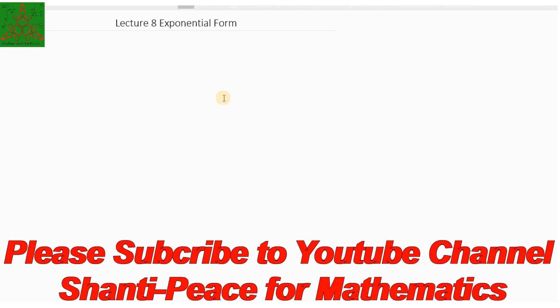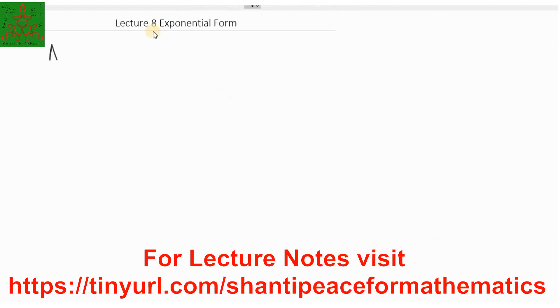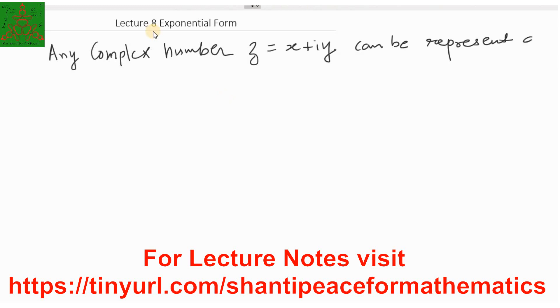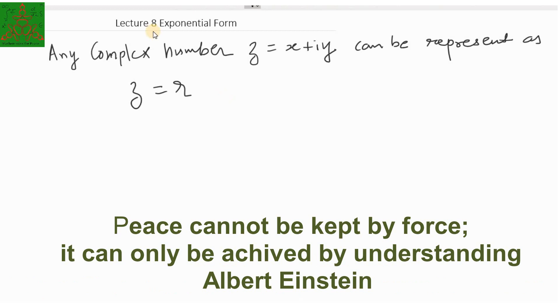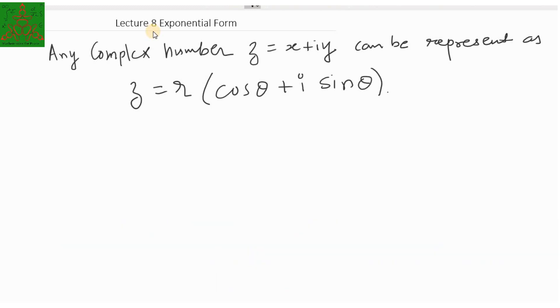Welcome to Santhi Peaceful Mathematics. In my previous video, you have learned about what is the polar form of a complex number. We learned that any complex number Z equal to X plus iY can be represented as Z equal to R into cos θ plus i sine θ.